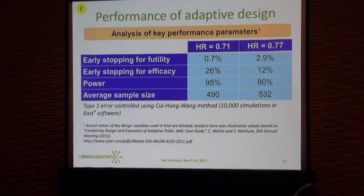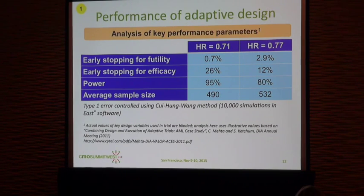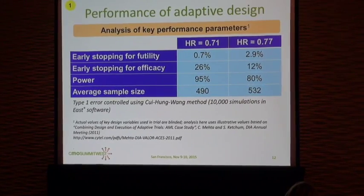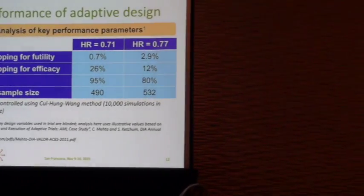These are the results of simulations with those hazard ratios they were concerned about. They expected a hazard ratio of 0.71 but were worried about 0.77. At a 0.77 hazard ratio, the power was 70%, but with this adaptive design they're able to get 80%. The cost is an increased average sample size. If the hazard ratio is at the expected 0.71, the expected sample size is 490 — higher than the original 450 — but with a correspondingly higher power of 95%. This seemed to balance out their requirements.